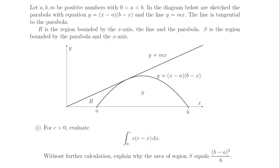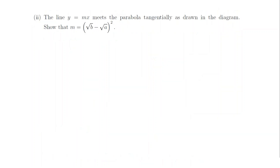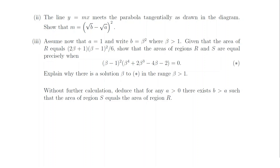Question 3, Part 1. The integral is c cubed over 6. For the area of S, translate the parabola left until the roots are 0 and b minus a. Then the area of S is exactly the integral we've just done, with c equal to b minus a. Part 2. Set mx equal to the equation of the parabola to get a quadratic. We want a repeated root, so the discriminant must be 0 — rearrange this for m. Part 3. The area of S is (beta squared minus 1) all cubed over 6. Set this equal to the expression for the area of R and simplify. Looking at the quartic in brackets: when beta is 1 the value is minus 3, but for very large beta it's clearly positive, so somewhere in between there must be a solution.